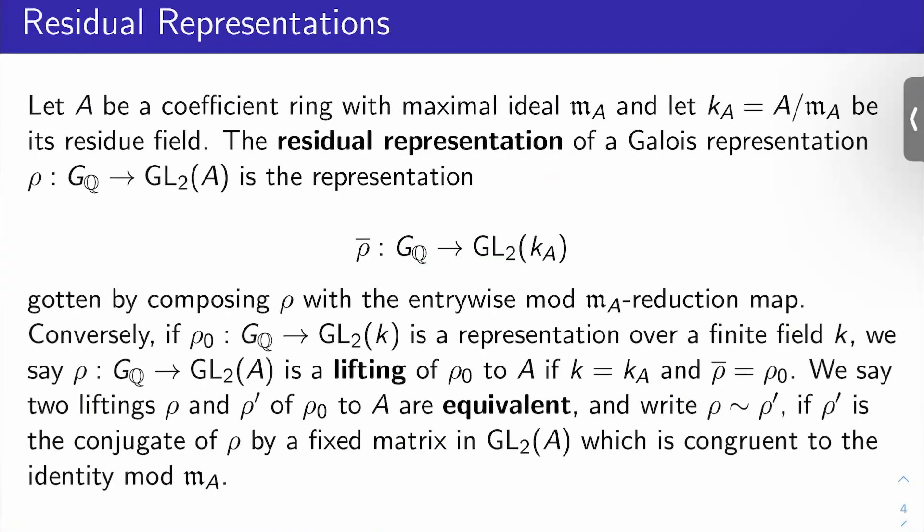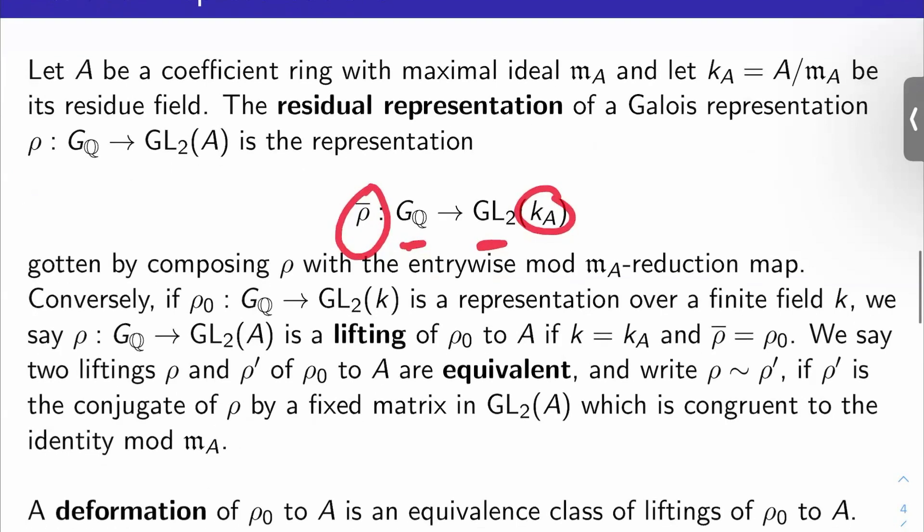So we have a Galois representation, let's say, rho from G_Q to GL_2(A) for some coefficient ring A. Let m_A be the maximal ideal of A and k_A be the residue field. There's another representation you can produce out of the one I gave you called the residual representation of rho. It's a Galois representation rho-bar from G_Q to GL_2 of the residue field, and what do you do? You just compose rho with the natural entry-wise mod m_A reduction map here.